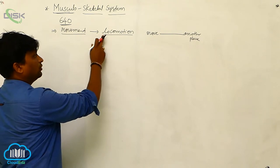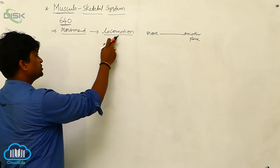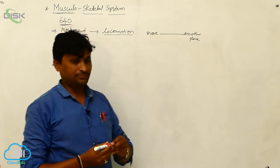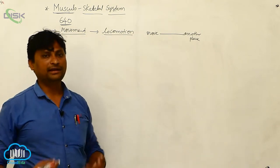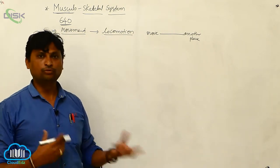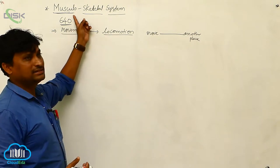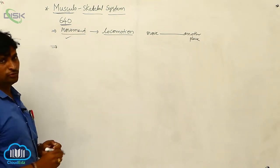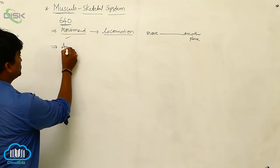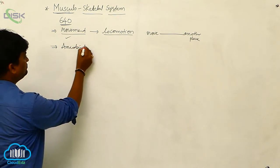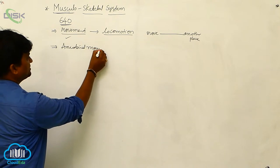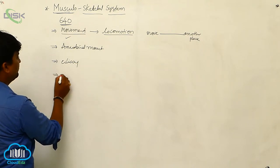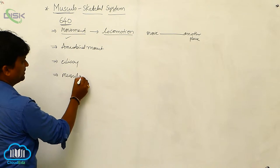All locomotions must show movements, but all movements we should not consider as locomotion. Inside the body, there are different types of movements. These are: first, amoeboid movement; second, ciliary movement; and third, muscular movement.